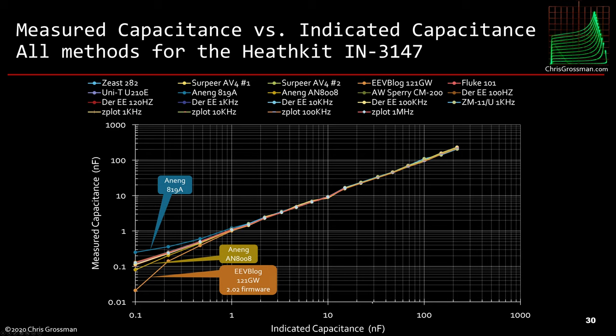Now if we plot all the data on the same plot, this is what we get. You can see here up in the legend everything I plotted, and you can see it all corresponds pretty well until we start getting down below two nanofarads, and things start varying off. These two Aneng meters and the EEVblog meter starts dropping down quite a bit. In fact, the EEVblog meter will measure zero for anything below about 60 picofarads.